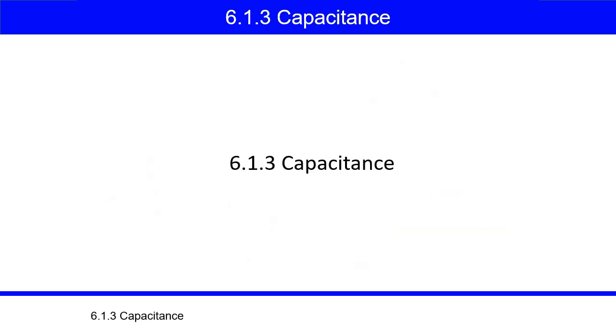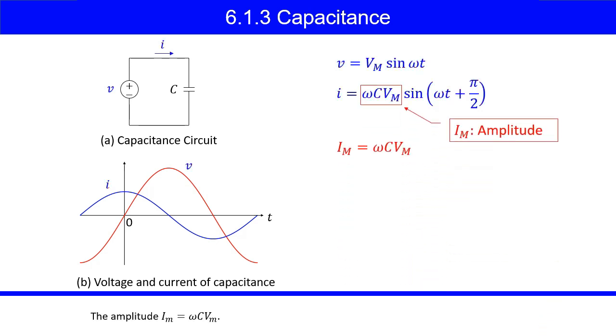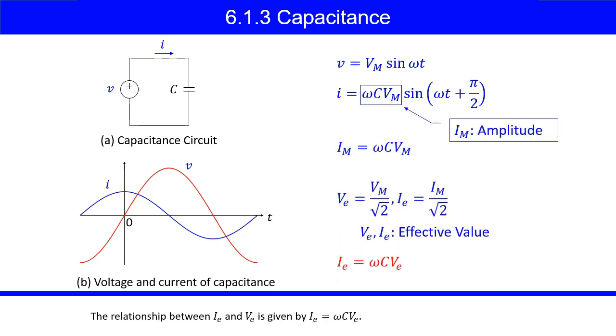Subsection 6.1.3, Capacitance. When the voltage V equals Vm sine omega T is applied to the capacitor C, the current I equals omega C Vm sine omega T plus pi over 2 flows. The amplitude Im equals omega C Vm. The relationship between IE and VE is given by IE equals omega C VE.